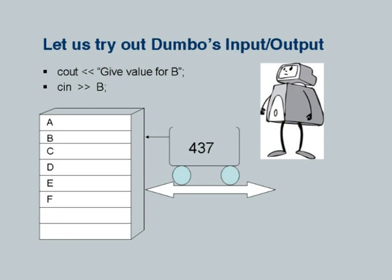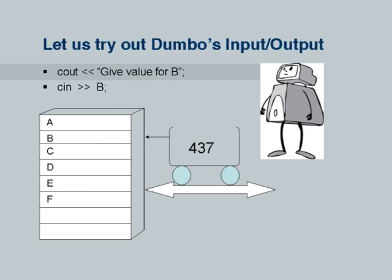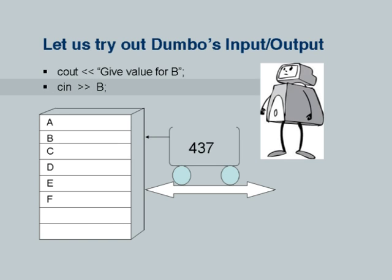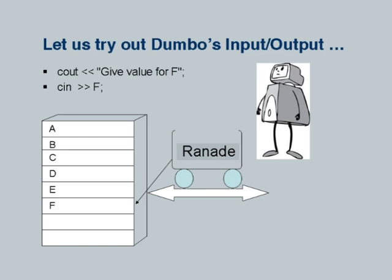We introduce an additional feature: in the output command to Mr. Dumbo, we can also include an explanatory string. For example, if location C represents some kind of count, just saying 'cout << c' gives us a value without context. We would also emphasize to students that when executing a program, they will see on each line either input to be given by us or output given by Dumbo, and the variable names we write have a direct implication on the way input and output is done. So, let us try out Dumbo's input-output: 'cout << "give values for b"' followed by 'cin >> b.'